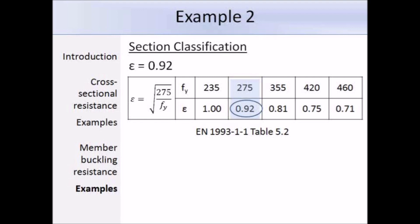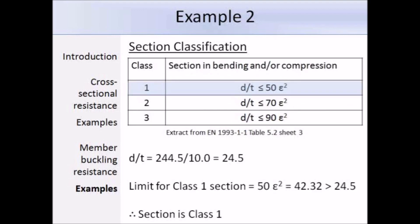For the class limits of a circular hollow section, we refer to sheet 3 of table 5.2 in the Eurocodes. The limits are slightly different because they are based on epsilon squared rather than epsilon. The limit for class 1 is 50ε², which works out as 42.32. The diameter-to-thickness ratio is 24.5, which is less than 42.32, so the section is class 1.